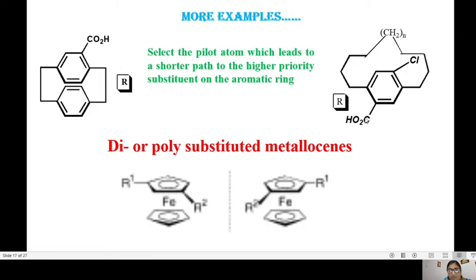When you have two substituents, you select the pilot atom which leads to a shorter path to the higher priority substituent on the aromatic ring. With chlorine and CO2H, the higher priority atom will be chlorine. So the pilot atom will be the carbon here. From this carbon when you move towards the chlorine you have a clockwise rotation. Rotation is R.